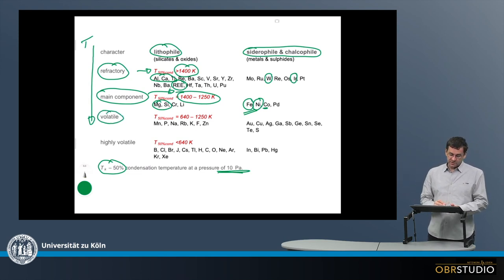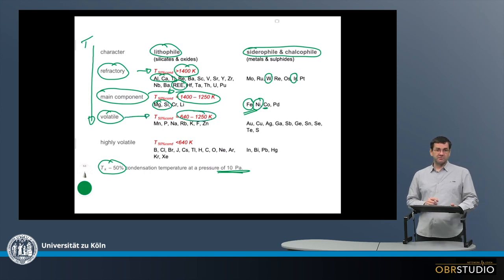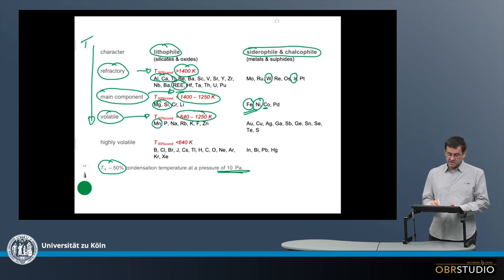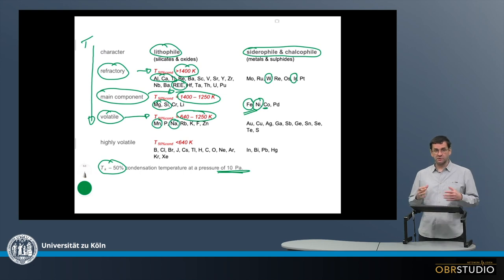Next are the volatile elements condensing at temperatures between 640 and 1250 Kelvin. Among these, the most important to memorize are manganese and sodium. Sodium condenses, for example, in feldspar. Of course, also potassium can condense in feldspar, but the abundance is much lower.